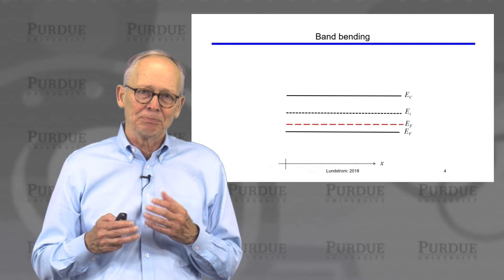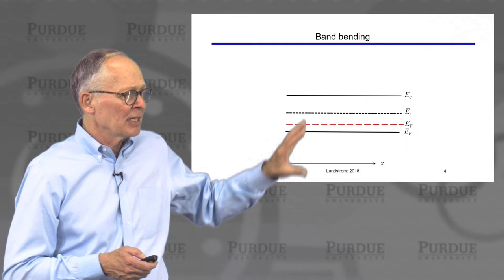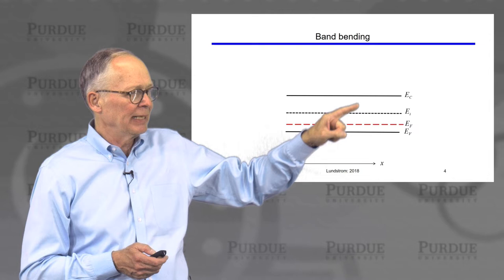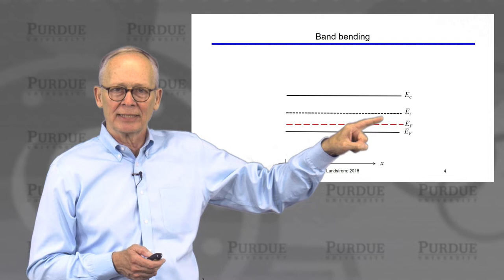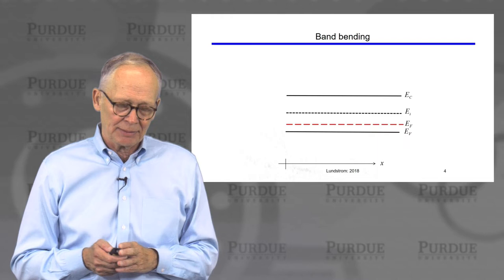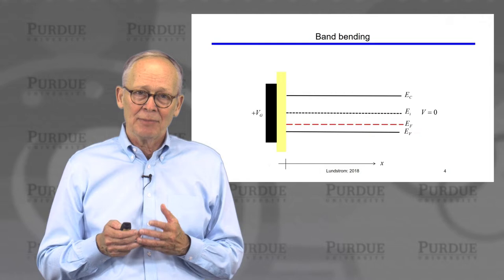Energy band diagrams are all about band bending, so we're going to try to understand what makes bands bend. Here's an energy band diagram for a p-type semiconductor. Here's my conduction band, here's my valence band. The intrinsic level is approximately the middle of the band gap, and my Fermi level is down near the valence band — so this is a p-type semiconductor.